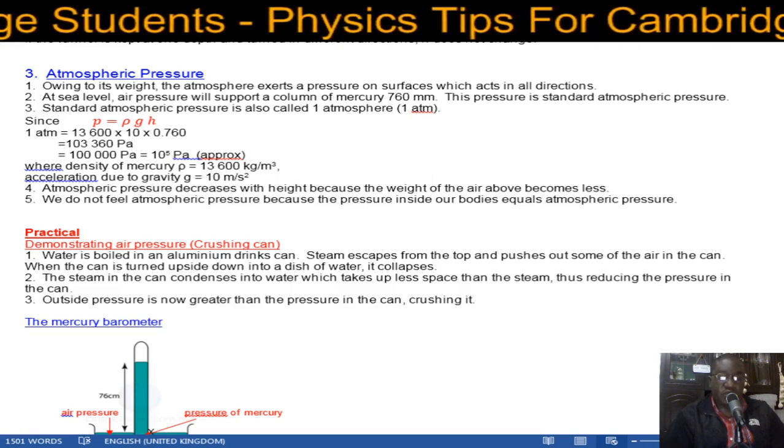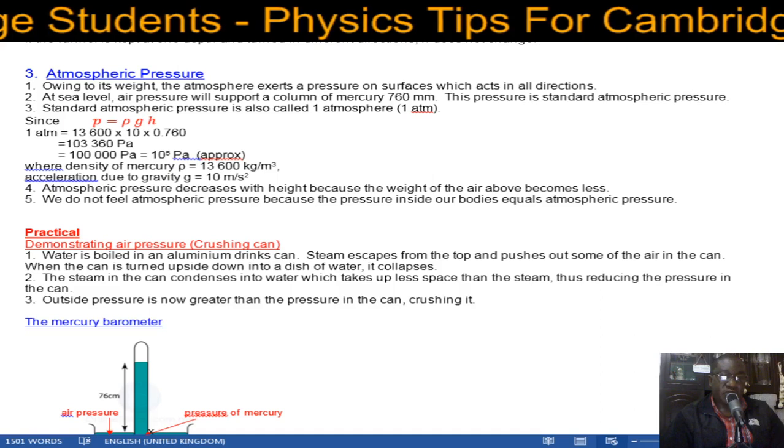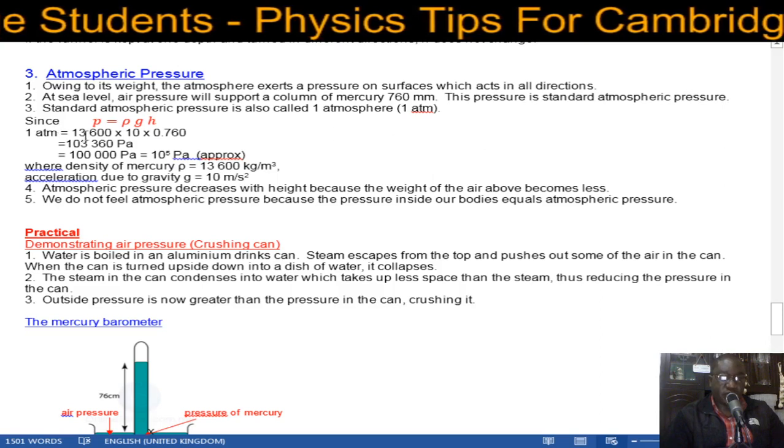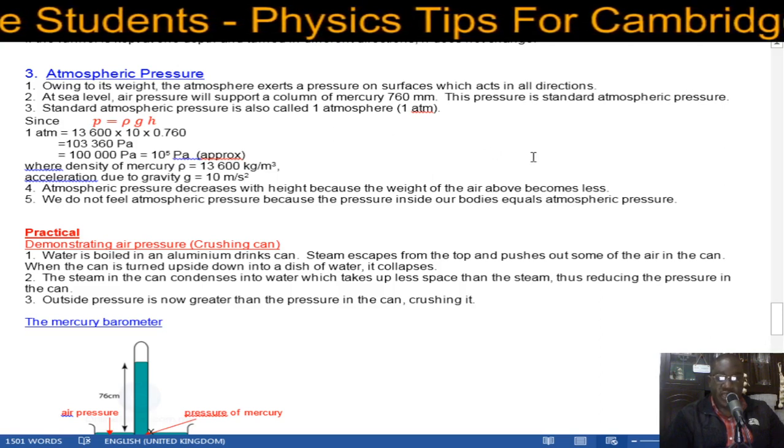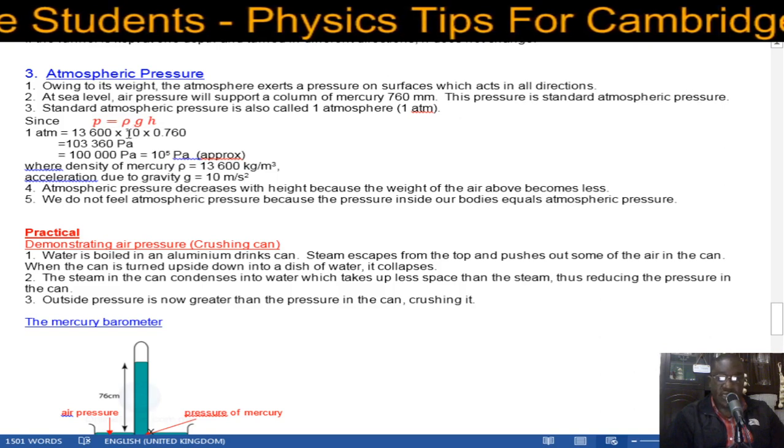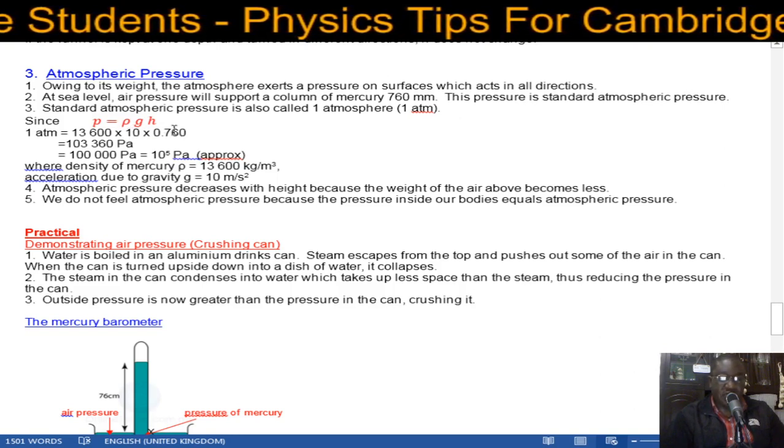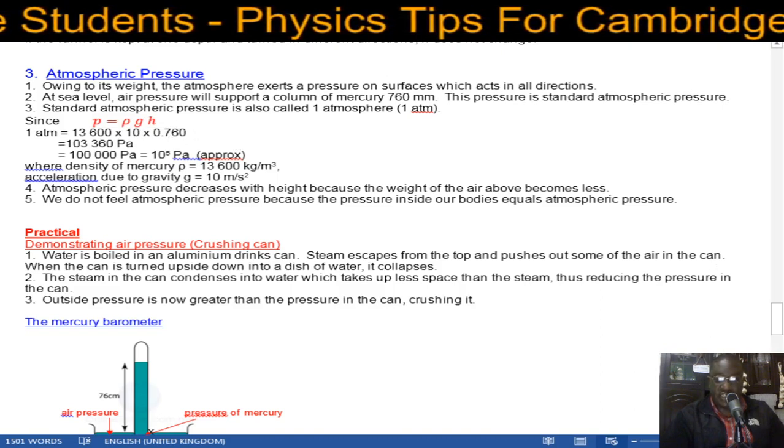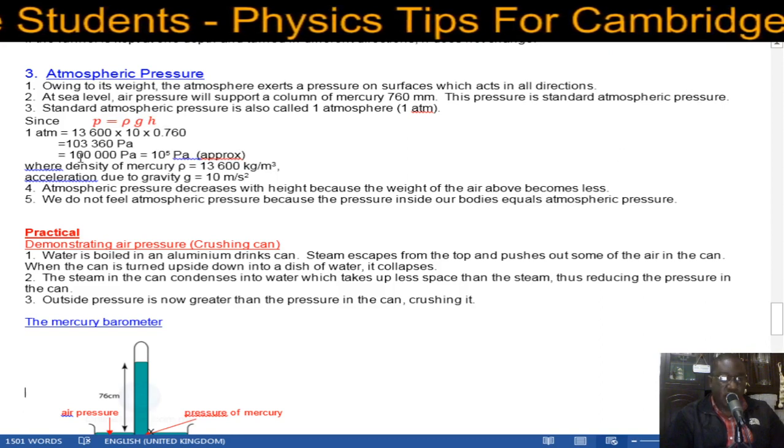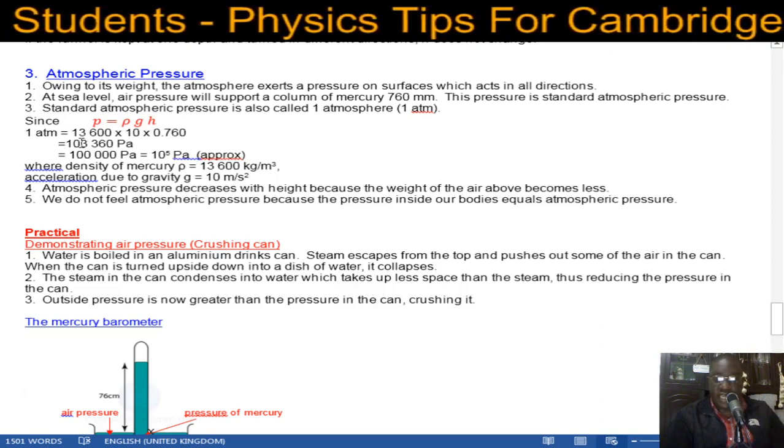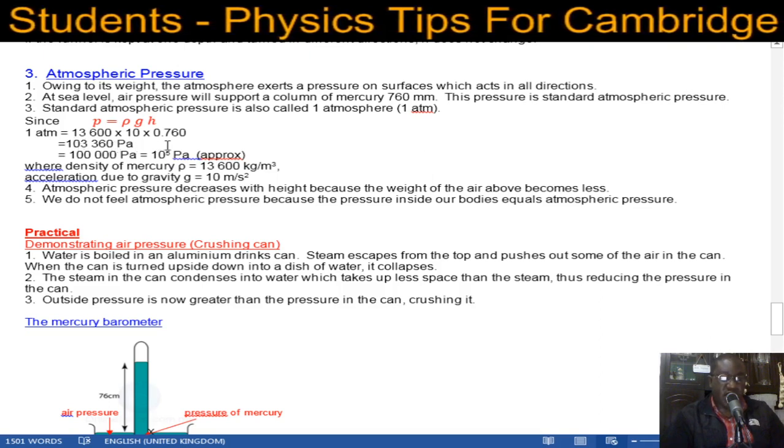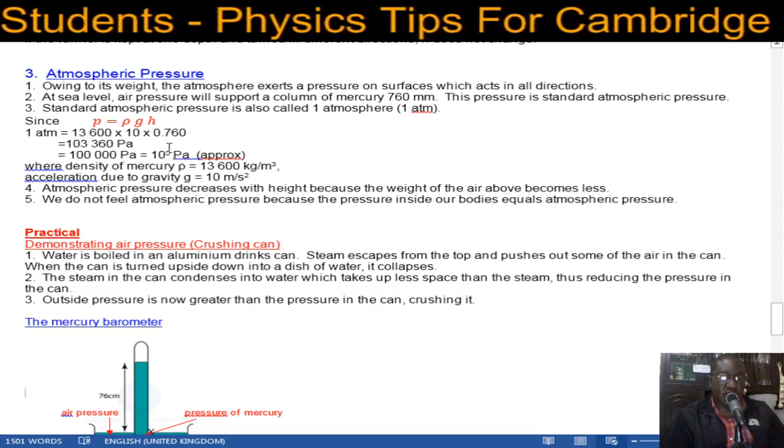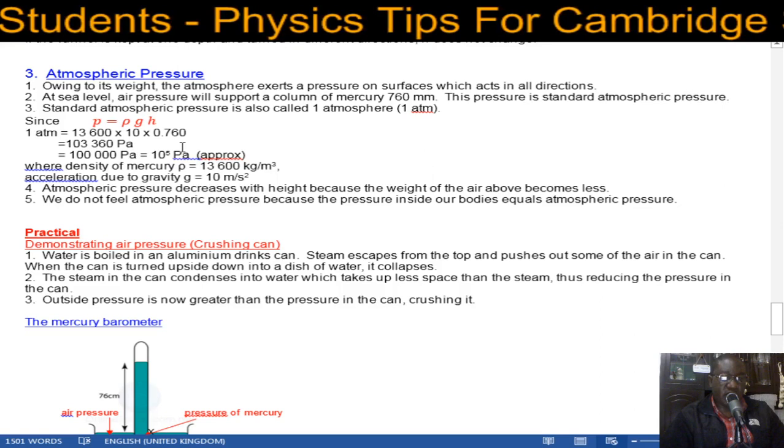Since P equals rho gh, one atmosphere will be equal to 13,600 (the density of mercury) times g which is 10, and then times 760 millimeters converted to meters becomes 0.760. If you work this out you find that you get 103,360 pascals, and to the nearest 10,000 it becomes 100,000.